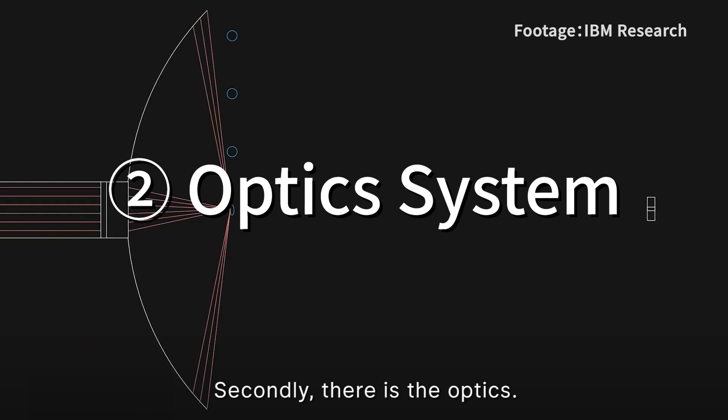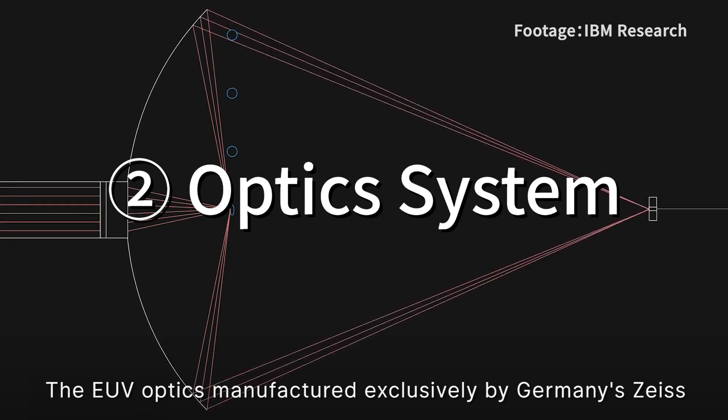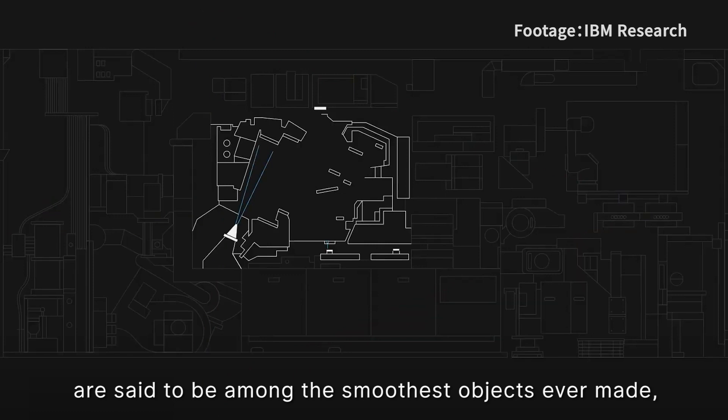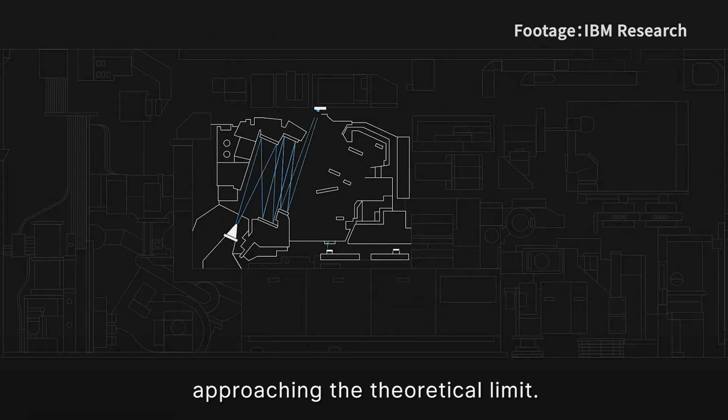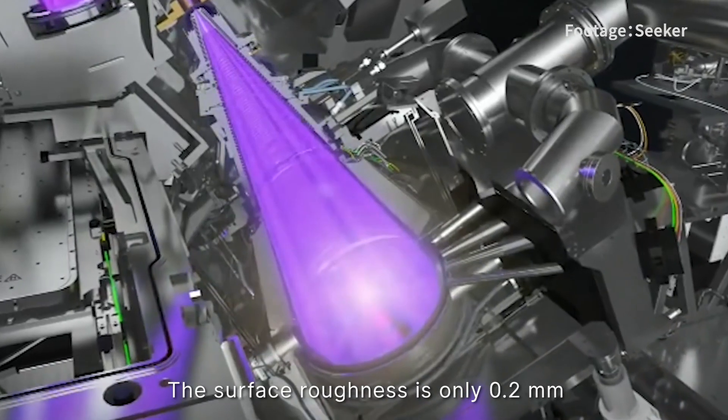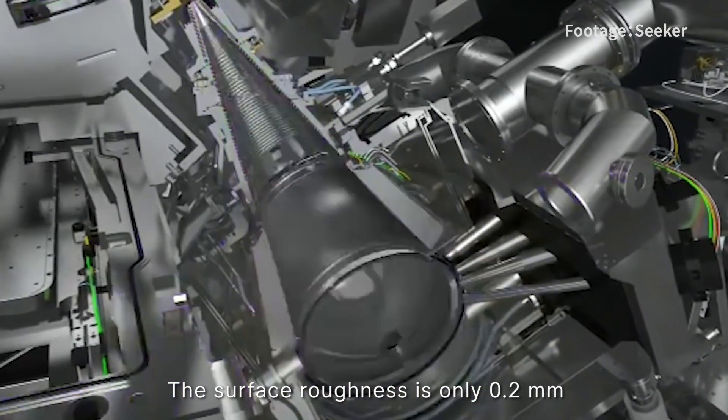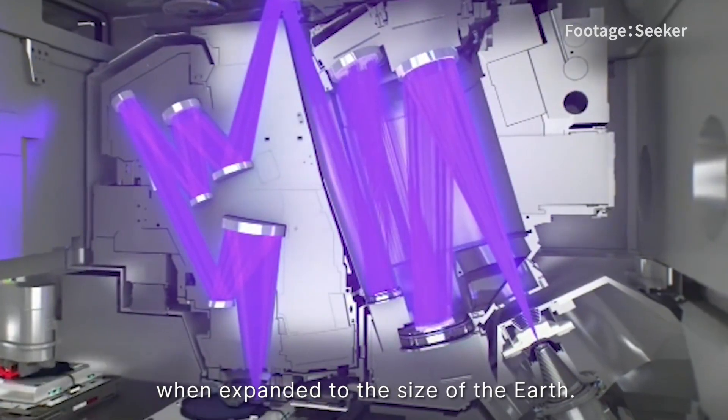Secondly, there is the optics. The EUV optics, manufactured exclusively by Germany's Zeiss, are said to be amongst the smoothest objects ever made, approaching the theoretical limit. The surface roughness is only 0.2 nanometers when expanded to the size of the earth.